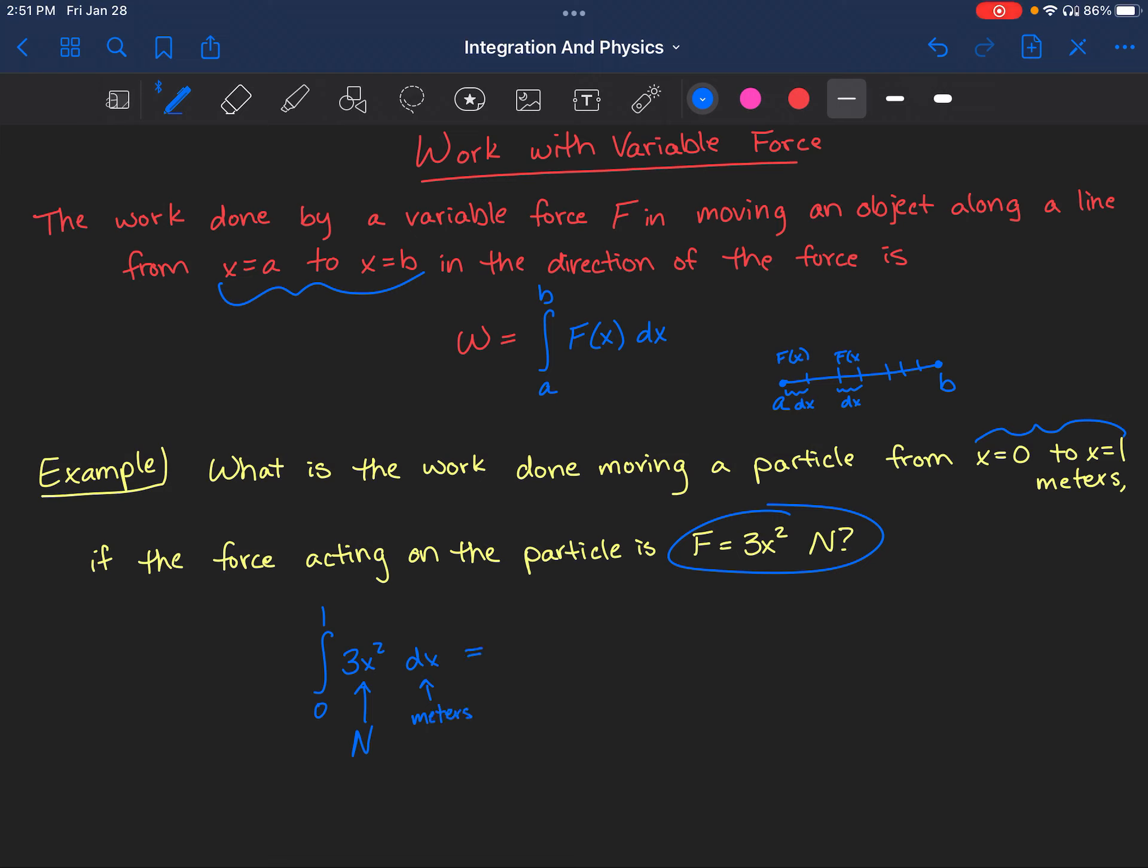I'm going to integrate this like normal. We'll do 3x³ divided by 3. So in reality, I don't even need the threes. We're evaluating from x=0 to x=1. So we'll do 1³ minus 0³, which is 1 minus 0 or just 1 newton-meter, which is the same thing as 1 joule.